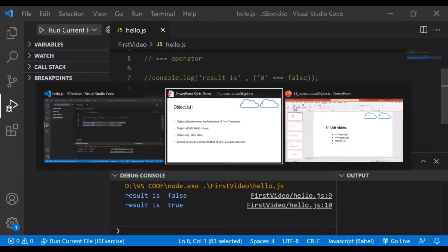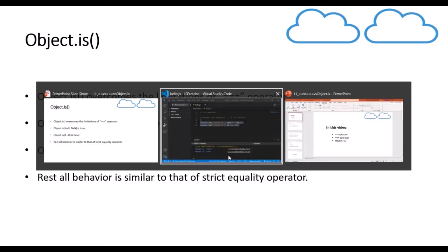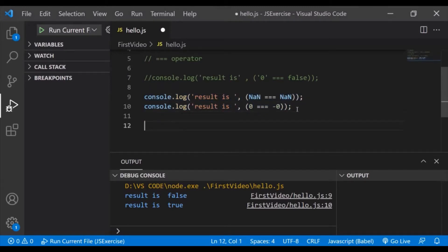To overcome this, in ES6, JavaScript released the helper method Object.is. Object.is overcomes the limitations of the strict equality operator. In the case of Object.is, NaN and NaN are considered the same, and 0 and negative 0 are considered different. All other behavior is exactly like the strict equality operator, but it handles these corner scenarios very well.